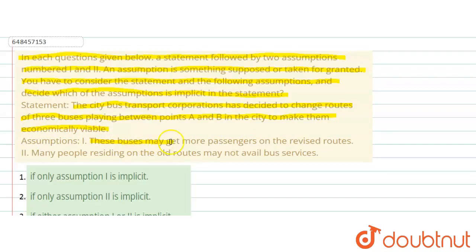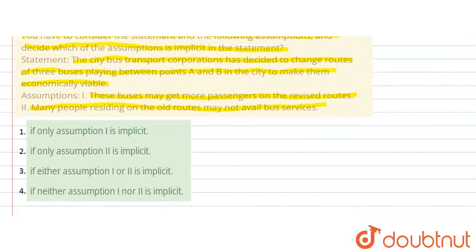Assumption one is: these buses may get more passengers on revised routes. Second assumption is: many people residing on the old routes may not avail bus services. Now, four options are given.